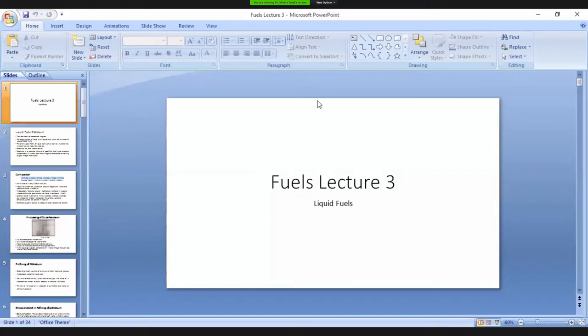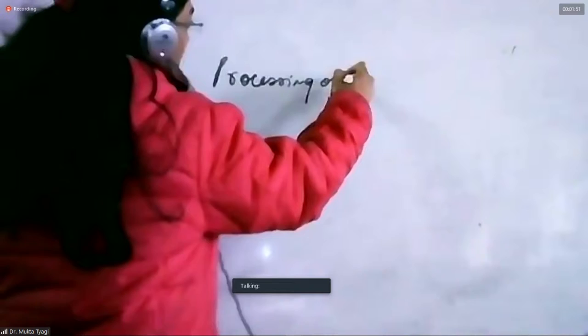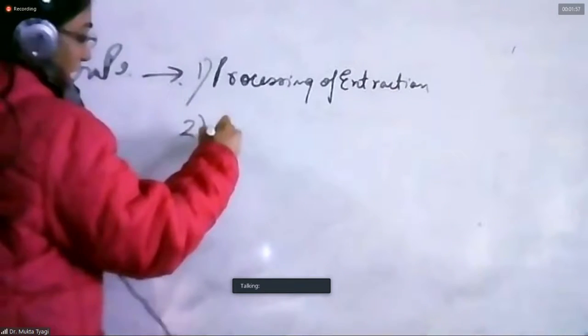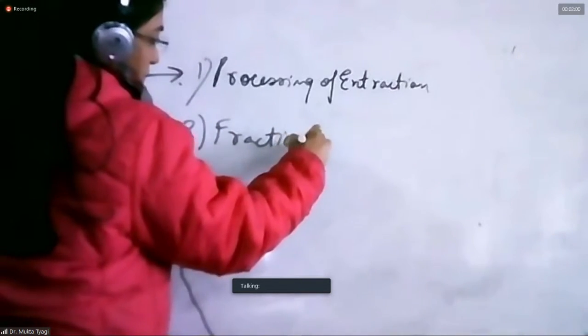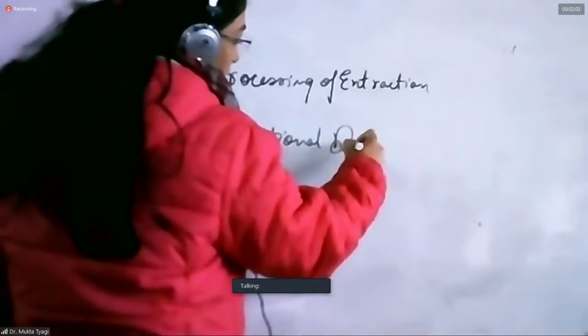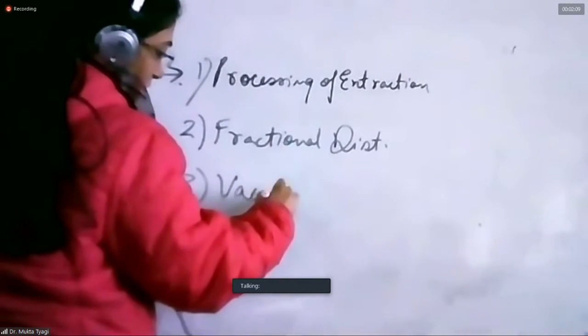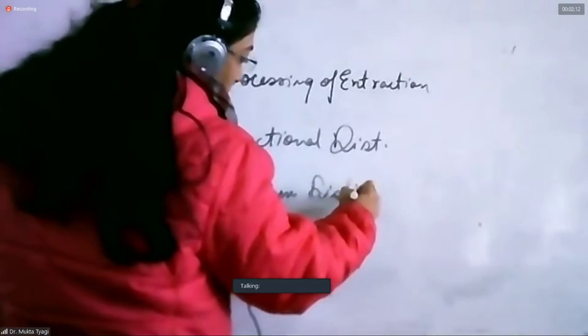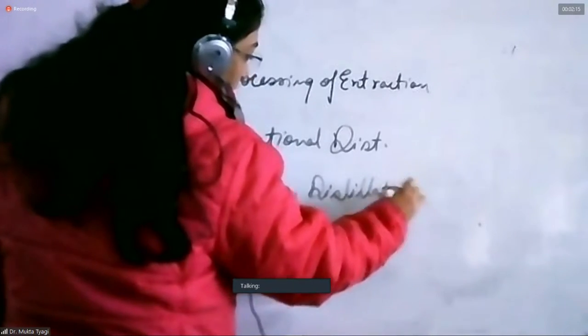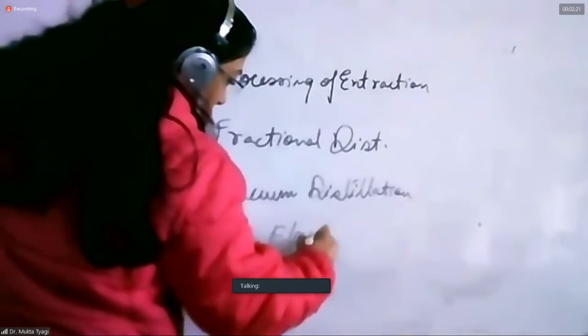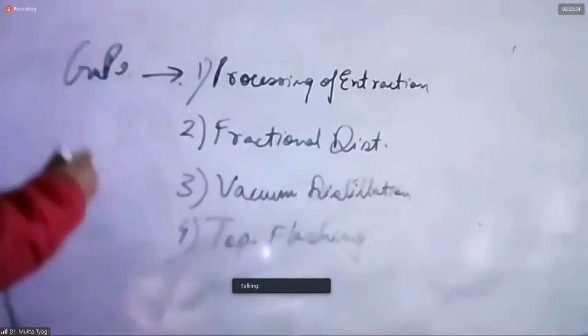We talked about crude oil and how it's processed. It's extracted as compressed oil from the Earth's crust. Then we talked about fractional distillation and vacuum distillation. This separates different components of the oil. A pressure less than the atmosphere is applied, and a cold spot towards the top flattens.